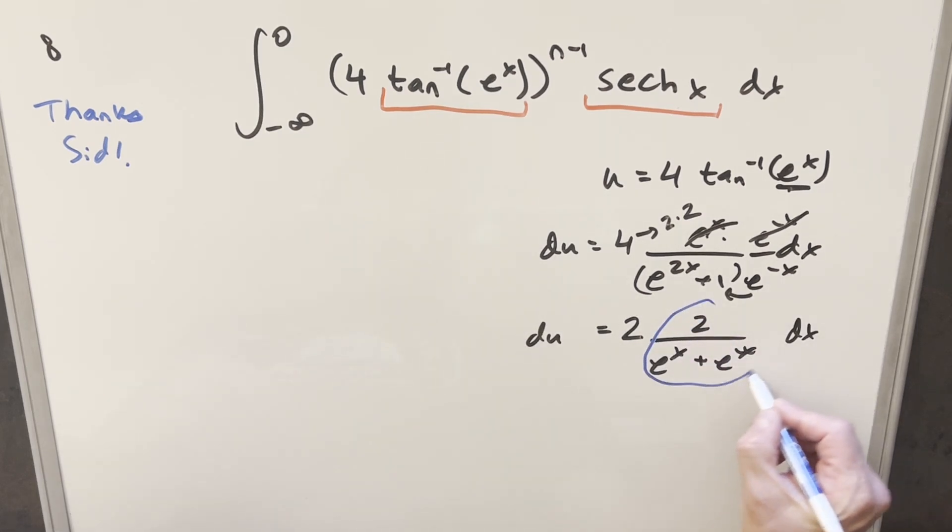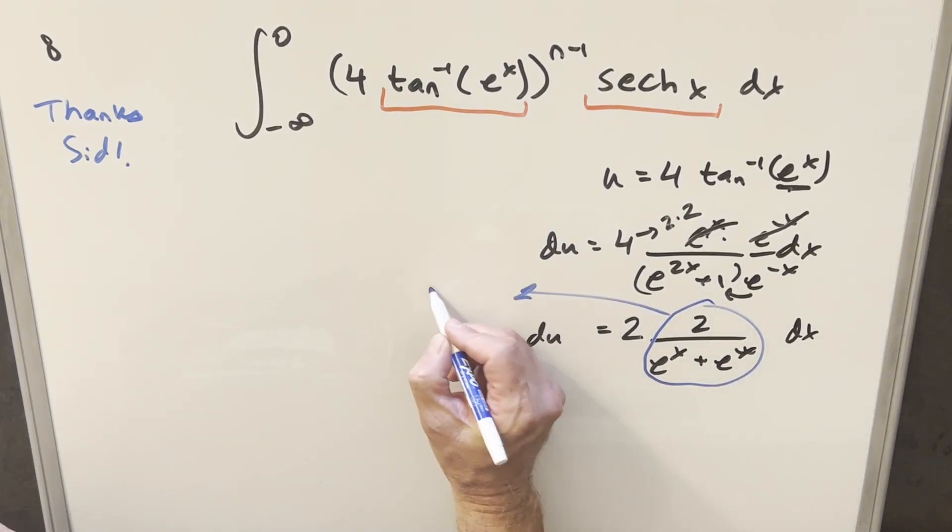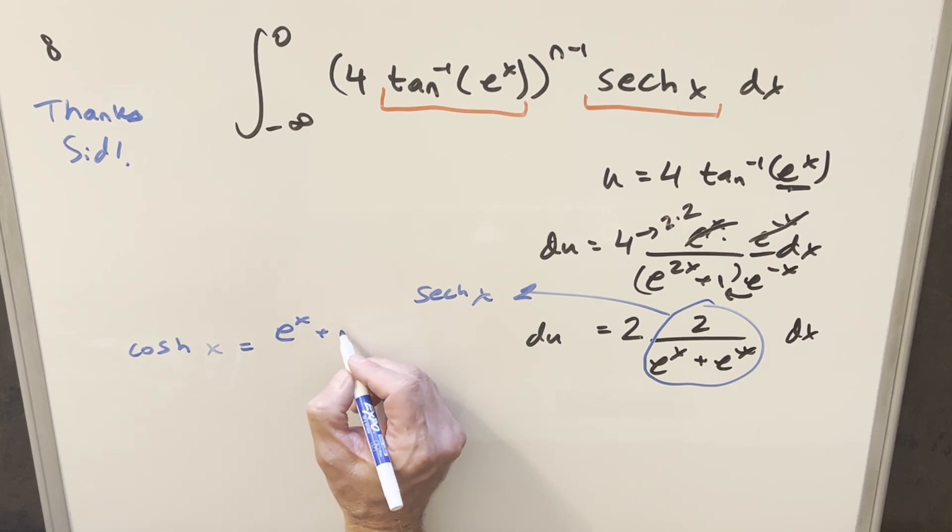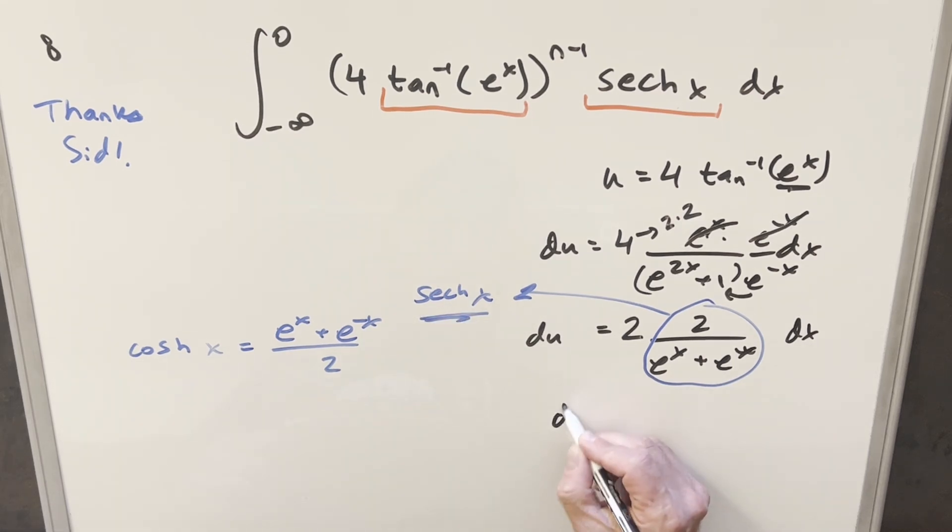But then what we have, this right here is actually going to be the hyperbolic secant of x. You may be more familiar if we write this as cosh of x. Cosh of x is going to be e to the x plus e minus x over 2. But this is just the reciprocal of this and that's why we end up with hyperbolic secant. So cleaning this up for our du value we'll just write this as two hyperbolic secant of x dx.